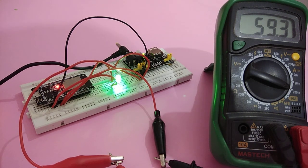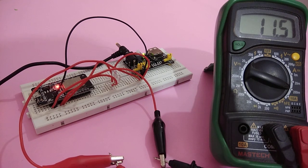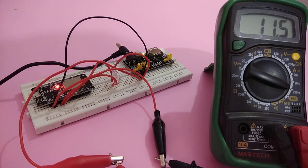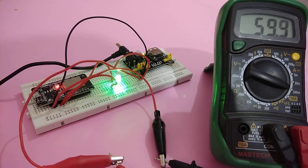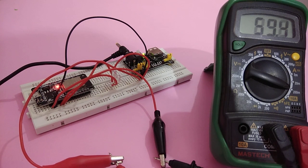You can see the green LED will glow. That means it is in active mode. When it is off, that means it is in deep sleep mode. You can see the multimeter. When green LED is on, that means it is in active mode, and the current consumption is near about 60 milliampere.